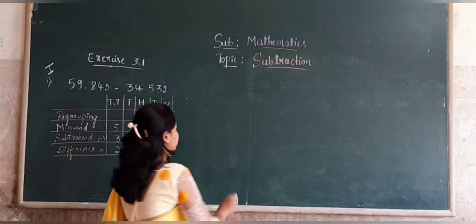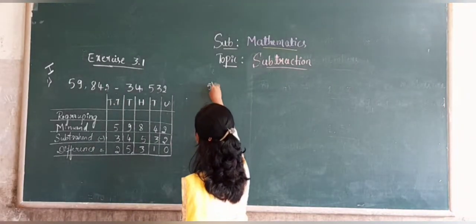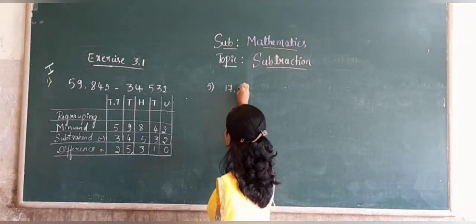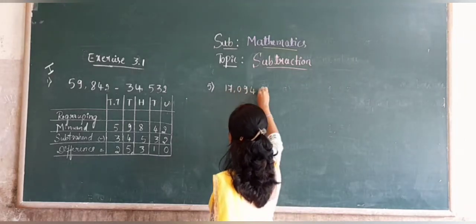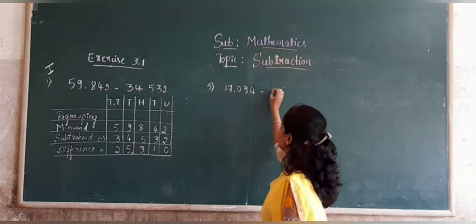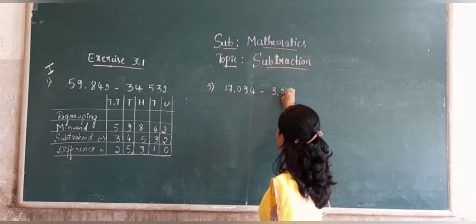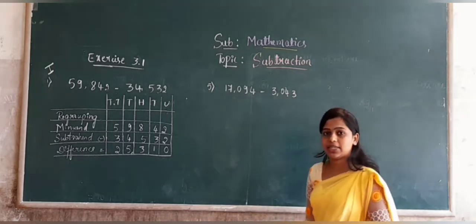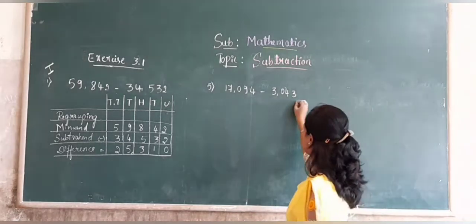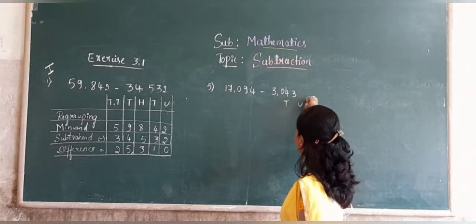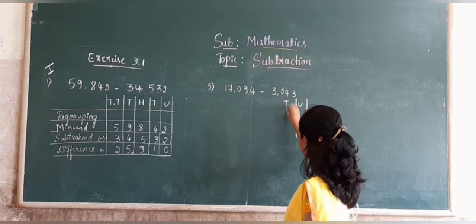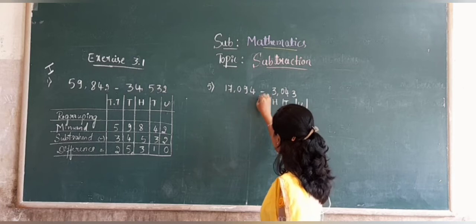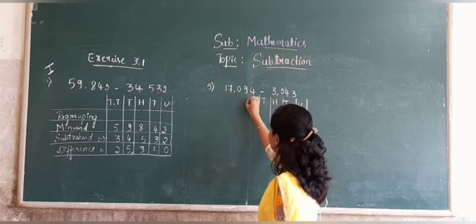Let's consider the next problem. We have 70,940 minus 3,043. Now arrange the given numbers according to their place value: units, tens, hundreds, thousands, and ten thousands.